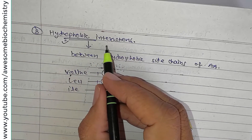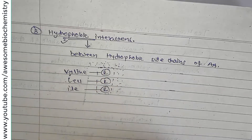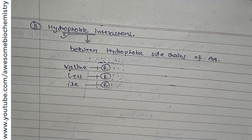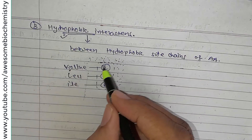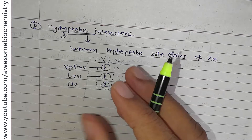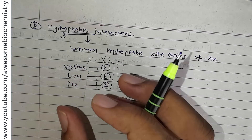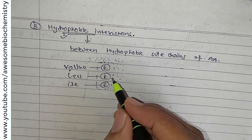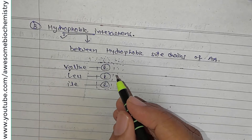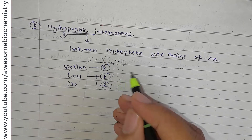Hydrophobic interaction is an important factor for maintaining tertiary structure. Generally, hydrophobic side chains are found in the core of compact globular proteins, and such association keeps them away from the water environment.